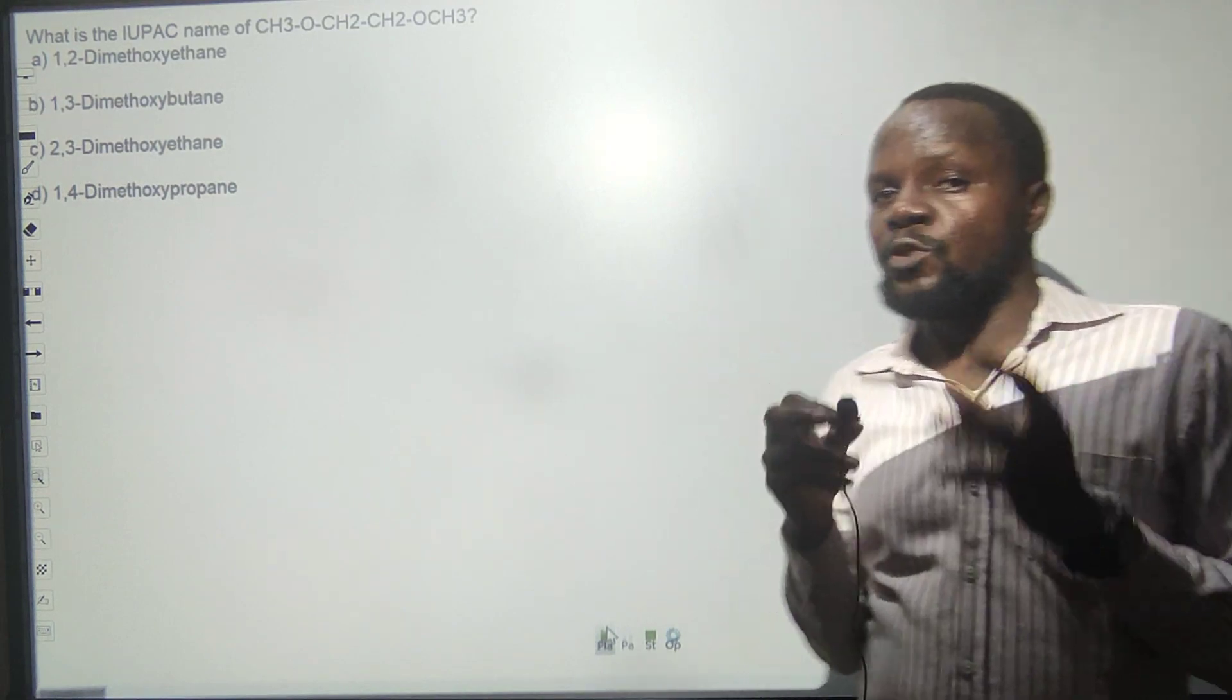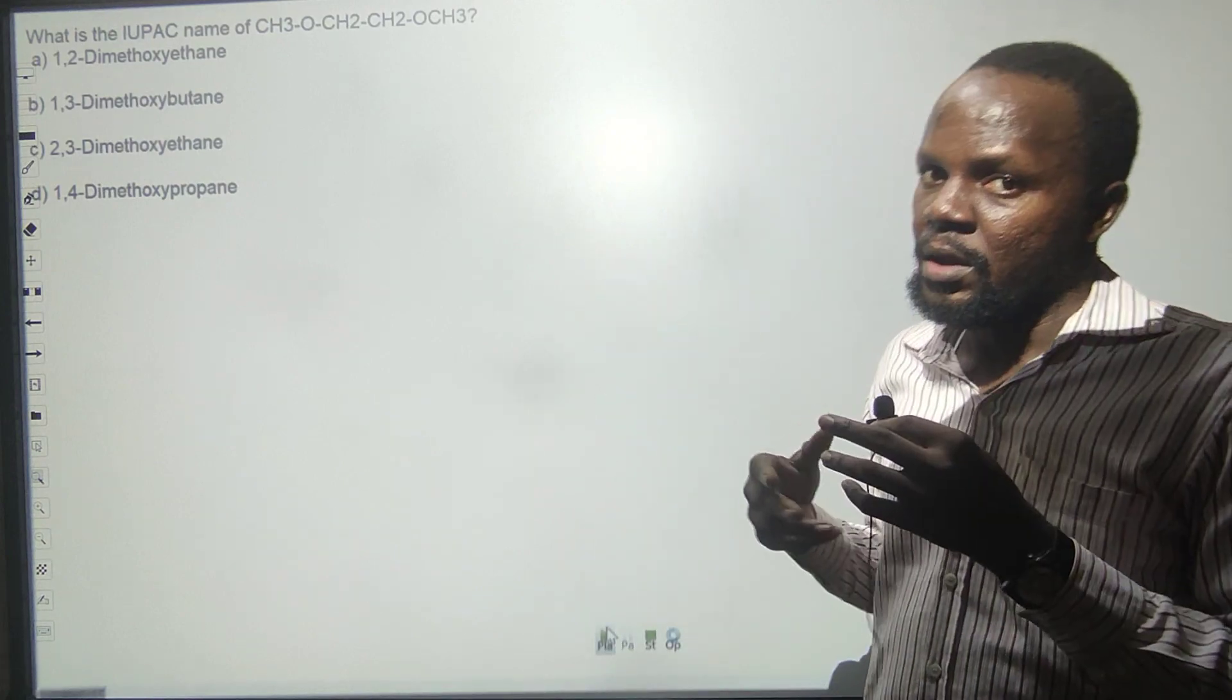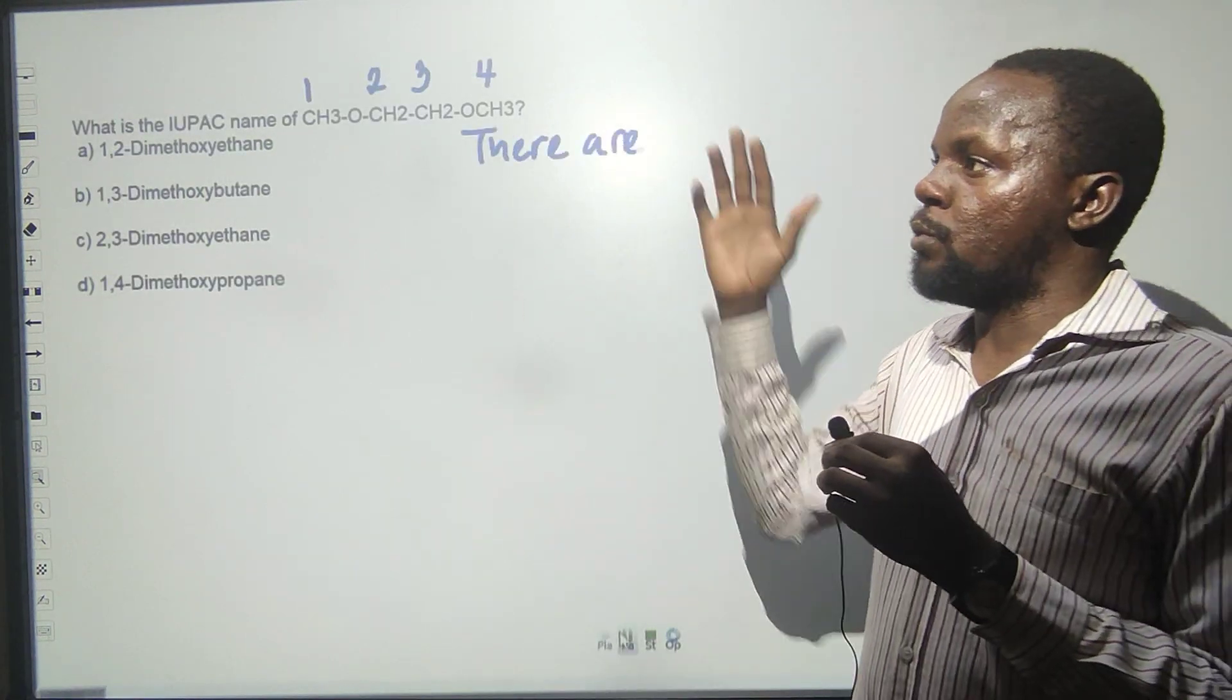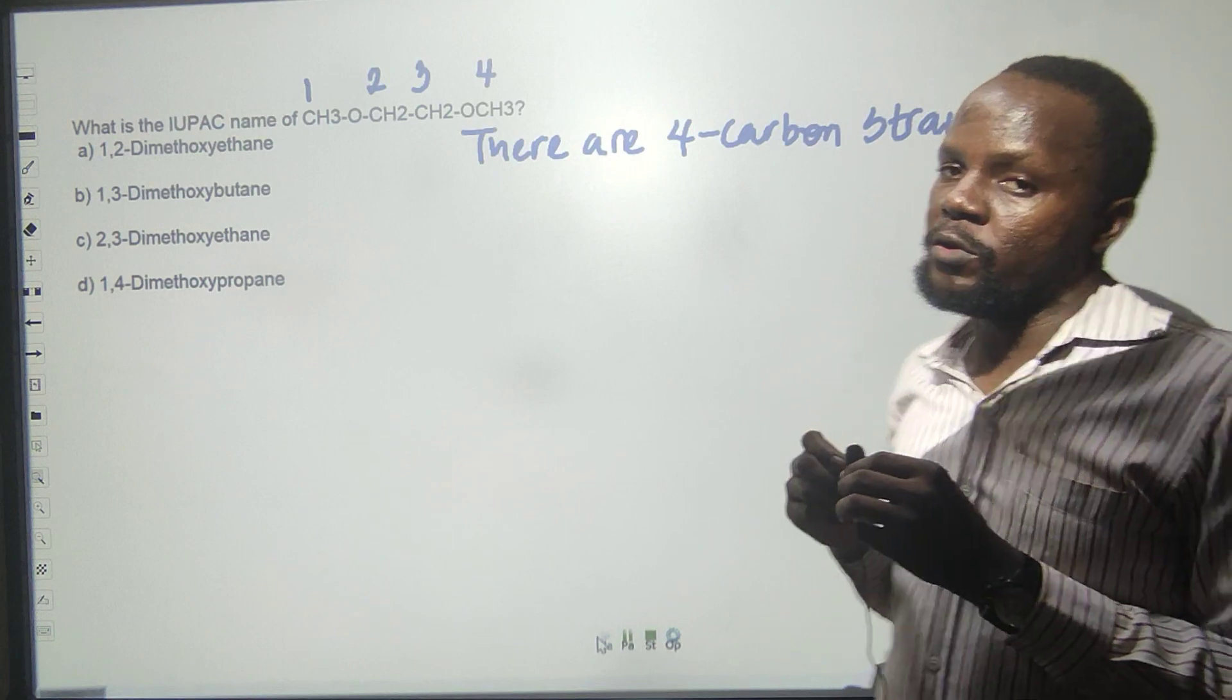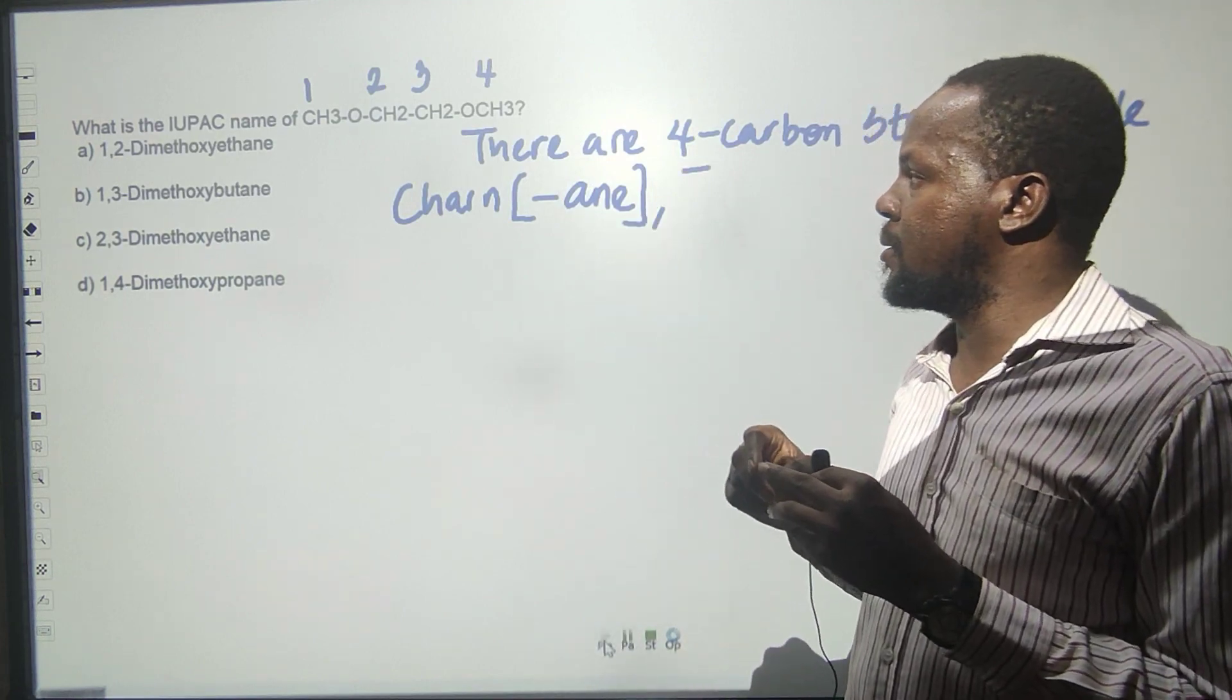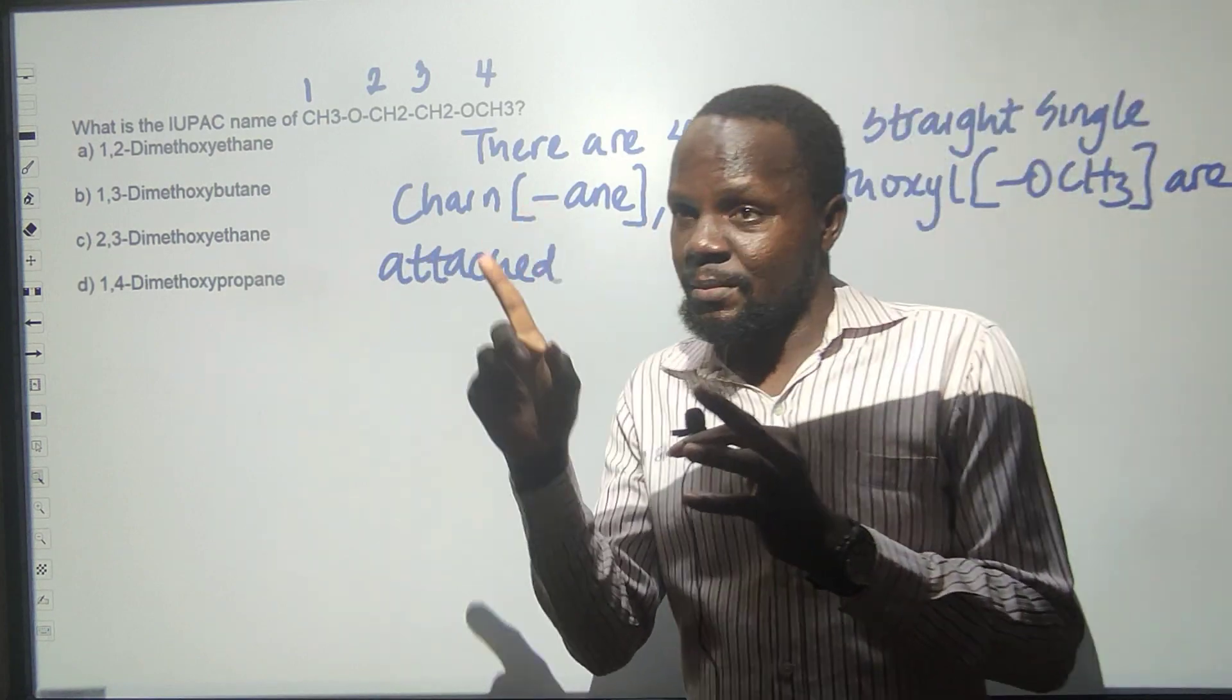Count the longest carbon chain: one, two, three, four - that is butane. You know butane with single bond is an 'ane'. We need to check the alkoxy groups - the first one is on the first carbon and the second one is on the third carbon. When it's between the first and second carbon, we take it as one; when it's between third and fourth, you take it as three. Please notice that's very important.